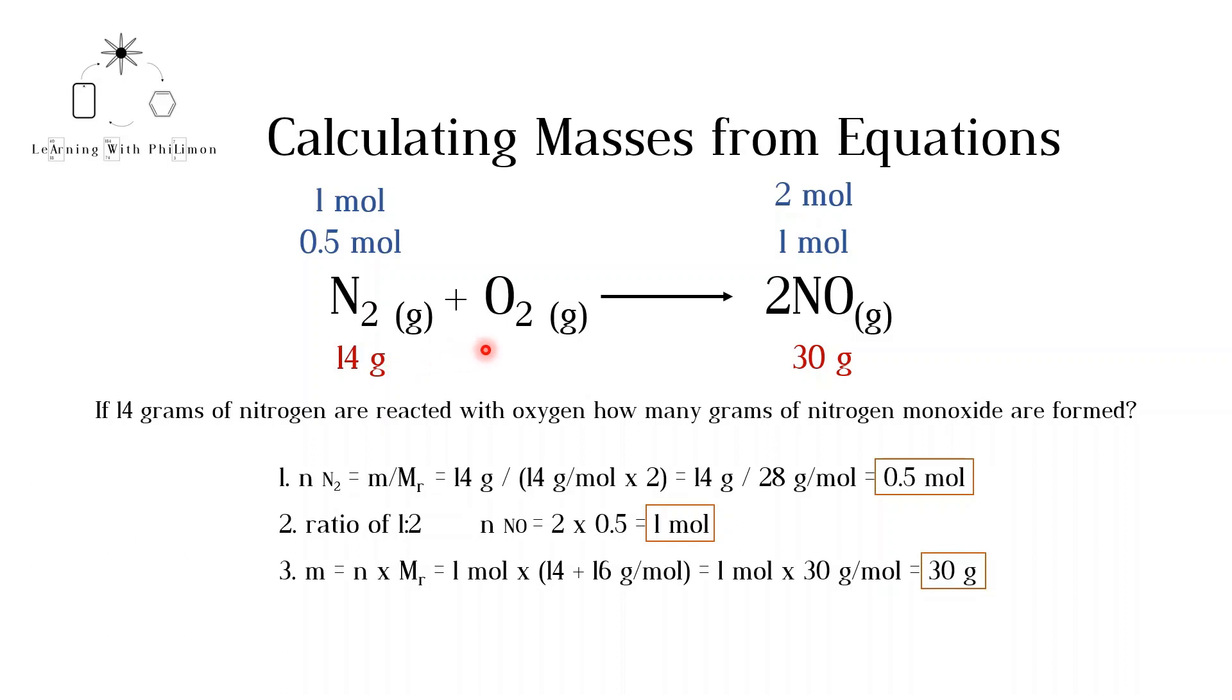At this stage, it seems like the law of conservation of mass is violated as we have gone from 14 grams to 30 grams. We have somehow created mass. However, this is because we have not considered the mass of the oxygen molecules. If the same number of moles of oxygen are reacted with nitrogen, we can calculate the mass of oxygen. This is equal to 16 grams. The reactants have a total mass of 30 grams, equivalent to that of the products. Therefore, the law of conservation of mass is met.